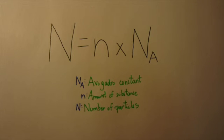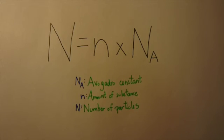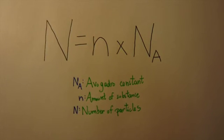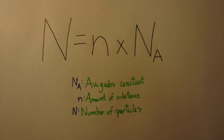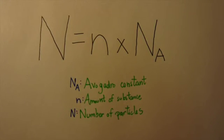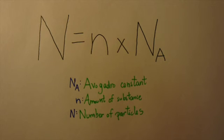The number of particles, represented by an uppercase N, can be found by the product of amount of substance with Avogadro's constant. For example, one mole of hydrogen contains the same number of molecules as one mole of silicon because they both have the same amount of substance.